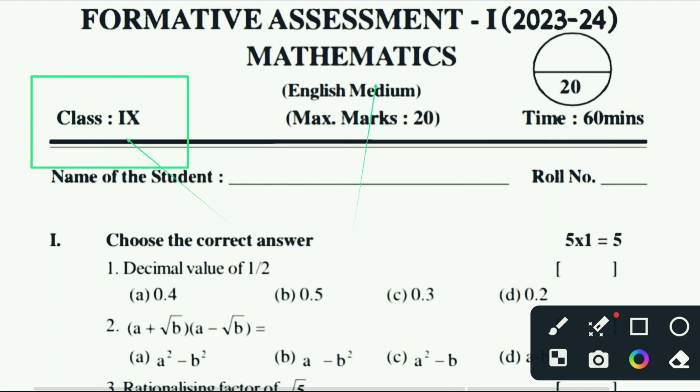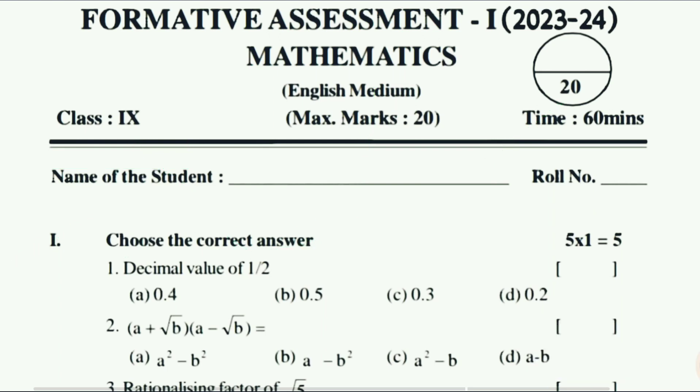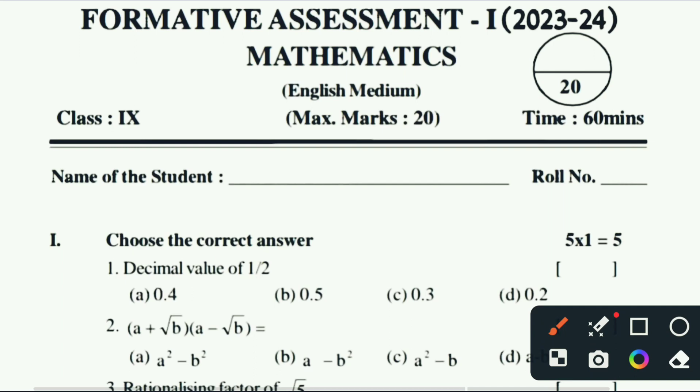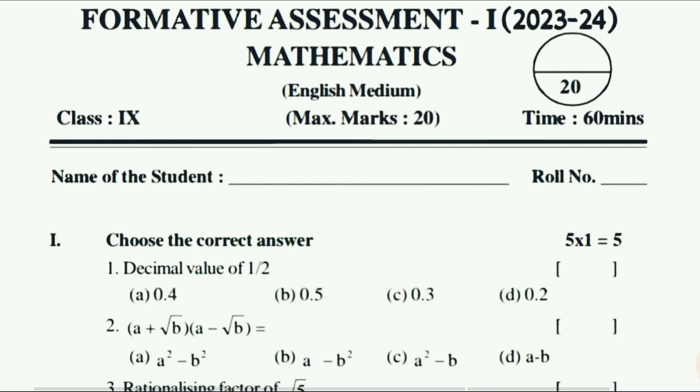This is a ninth class mathematics question paper. You can see your time and then your first question: choose the correct answer. Your first question is decimal value of 1 upon 2. You can see your first option, second option, third, and fourth.